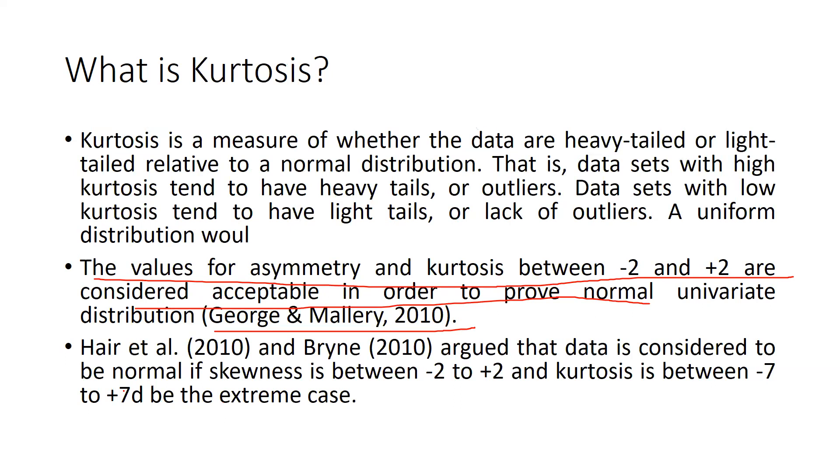But Hair et al. 2010 and Bryne 2010 argued that data is considered to be normal if skewness is in between minus 2 to plus 2 and kurtosis is in between minus 7 to plus 7 to be the extreme case.